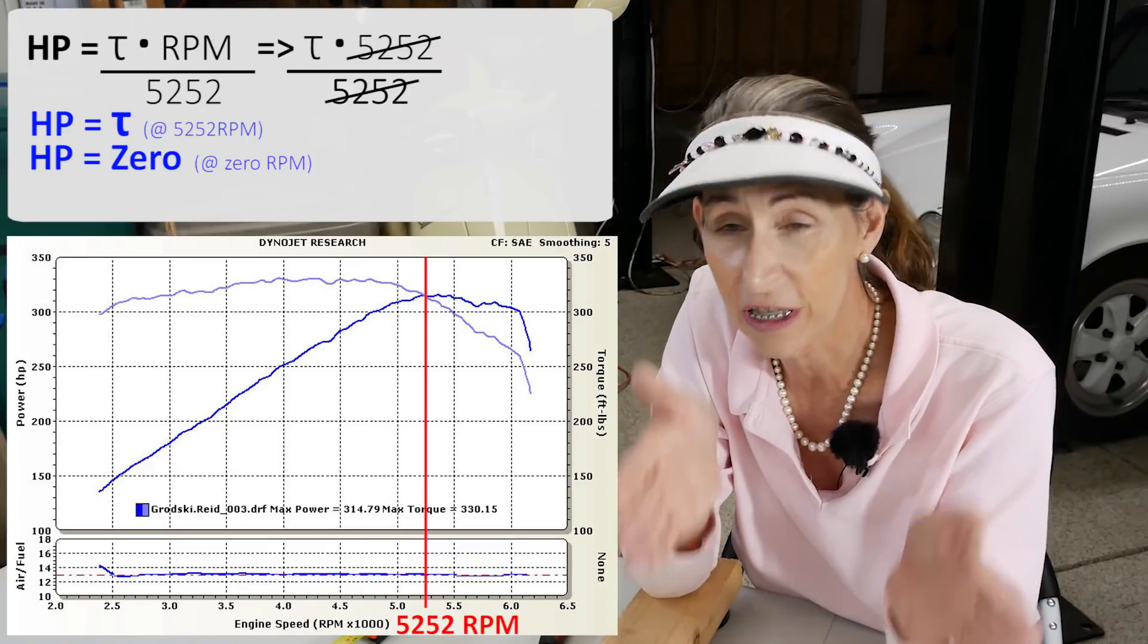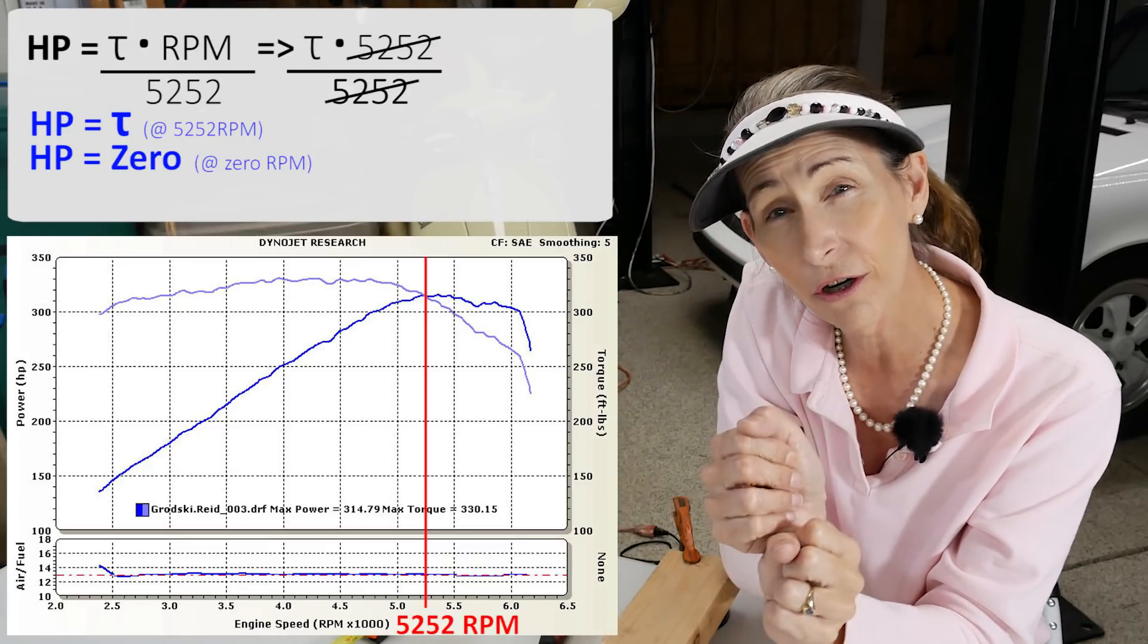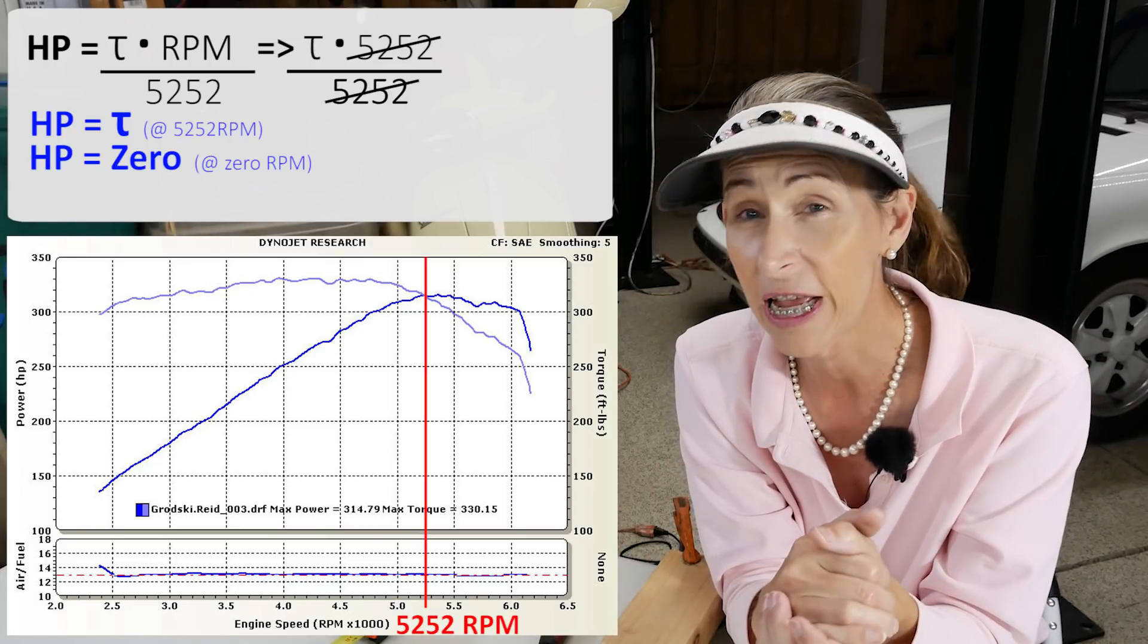So it might put out its maximum torque, but it's going to put out zero horsepower at that point. It's not until that shaft starts to turn that we get any work accomplished. And then the work over time is power. So that's interesting.